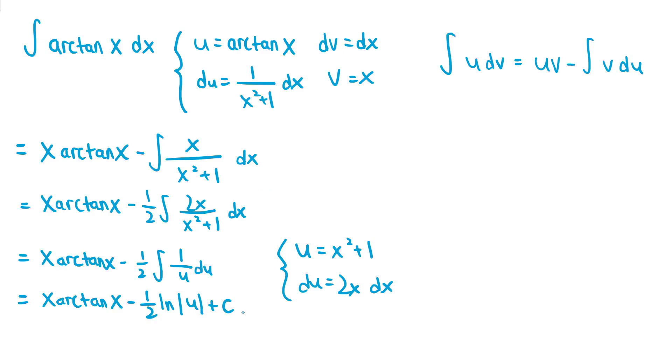The last thing to do is to substitute the x squared plus 1 back in for the u. So the final answer is just x arctan of x minus 1 half times ln of x squared plus 1 plus some constant c.